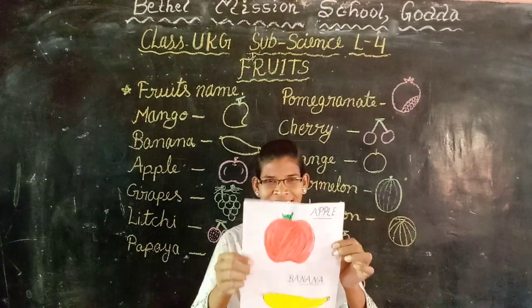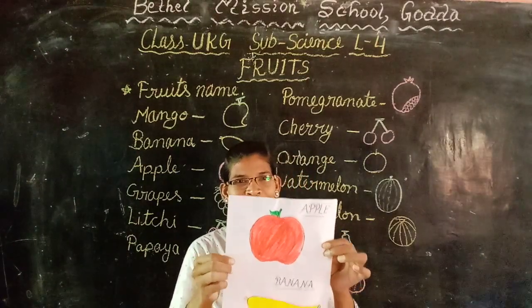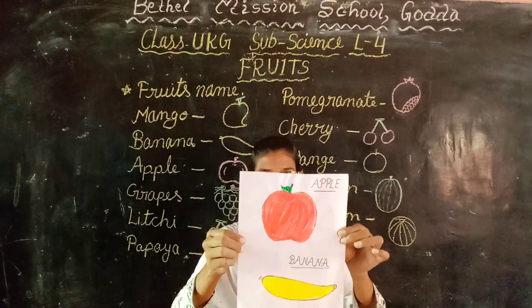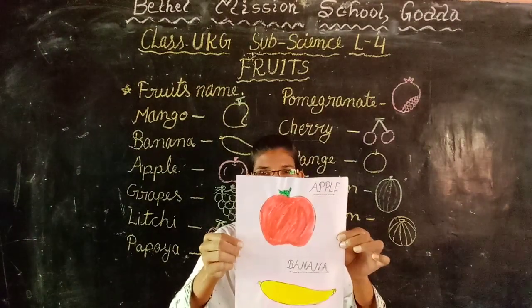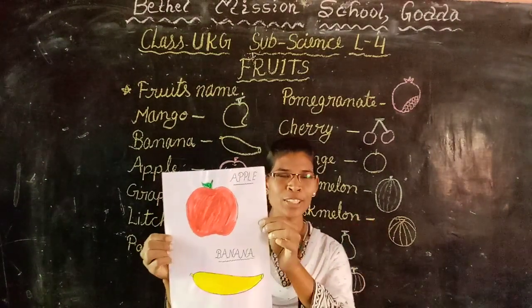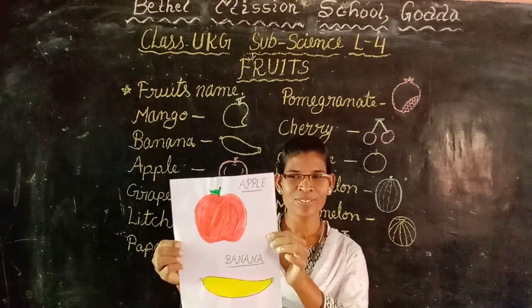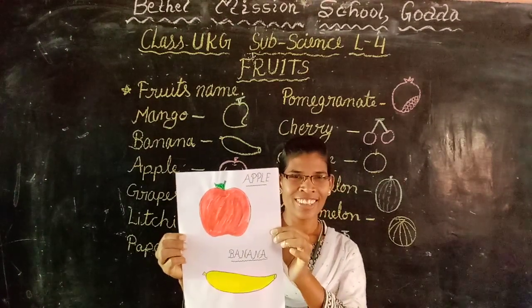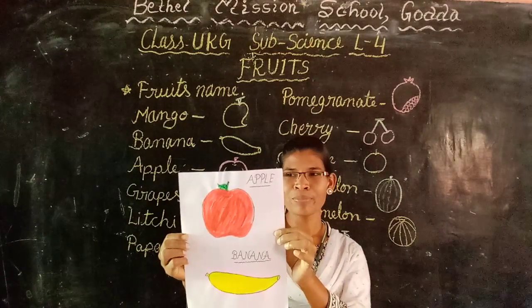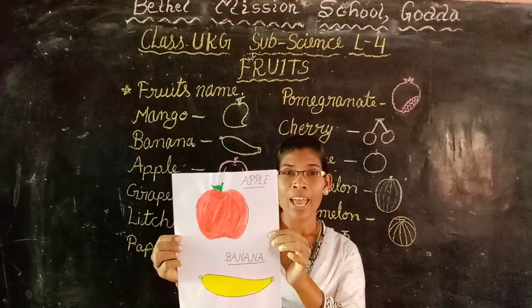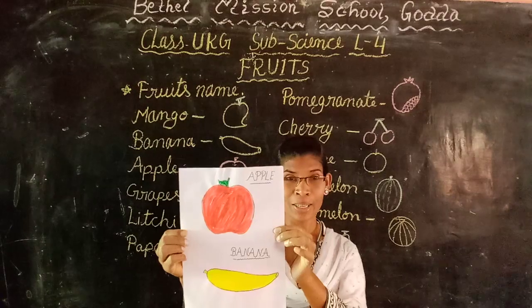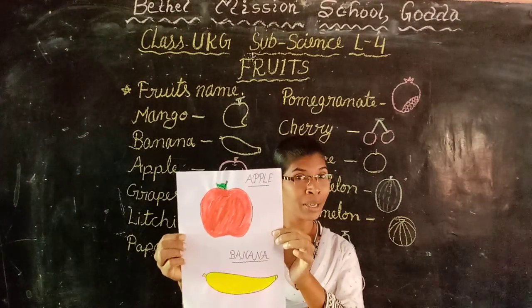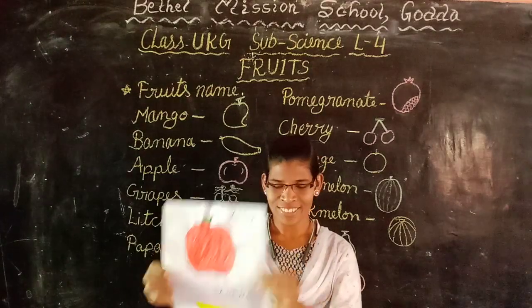So look at this picture. Are you able to see? In this picture there are two fruits. What fruits are there? Can you tell me the name? Apple and banana. Very good.